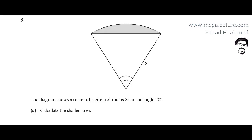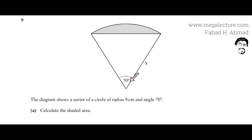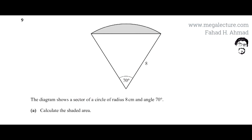The question shows a sector of a circle with radius 8 centimeters and angle 70 degrees. This is the sector — 8 centimeters is the radius of the circle from which this sector has been taken, and 70 degrees is the angle of this sector. We need to calculate the shaded area.